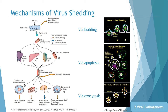Viral shedding refers to the expulsion and release of virus progeny following successful reproduction during a host cell infection. Shedding of infectious virions is crucial to the maintenance of infection in populations. For viruses that replicate only at epithelial surfaces, the exit of infectious virions usually occurs from the same organ system involved in virus entry. In generalized viral infections, shedding can occur from a variety of sites. The amount of virus shed is important in relation to transmission, as some viruses occur in such high concentrations that a minute quantity of virus-laden secretion can readily lead to transmission. Viral shedding can be through budding, apoptosis, and exocytosis.